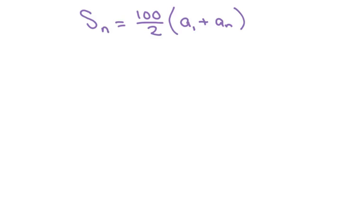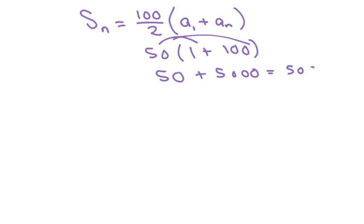So basically, this would have been 50 times 1 plus 100, which is 50 if you distribute plus 5,000. Which is a better way to mentally add that without a calculator. And so that gives you 5,050.